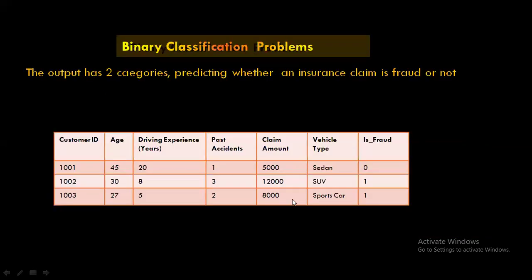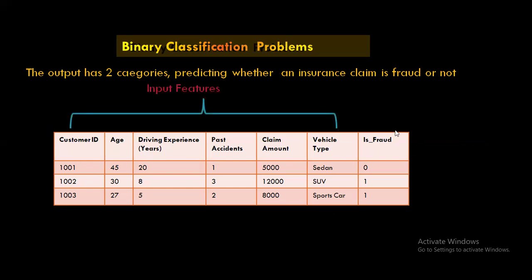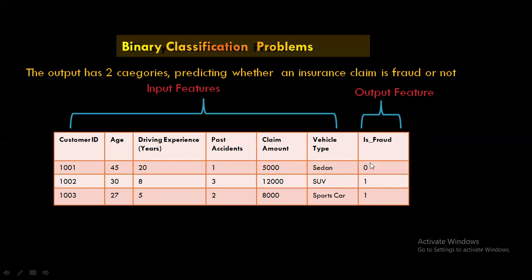This dataset contains both the input features and the labeled output feature. You train your model with both the input and labeled output feature — that is supervised machine learning. In this binary classification problem, the labeled output feature is called 'is fraud.' It contains either zero or one and will not contain more than two classes. Hence it is called a binary classification problem.